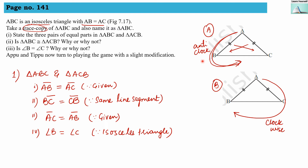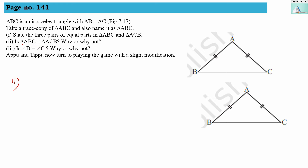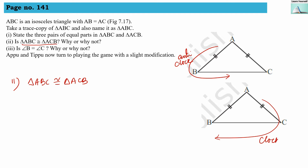The second question: triangle ABC is congruent to triangle ACB. Triangle ABC has names in anti-clockwise pattern; triangle ACB has names in clockwise pattern. We need to prove this congruence. Since both triangles are trace copies of each other, we check which congruence criteria applies. RHS will not work here as there is no right angle, so we choose from the remaining three criteria.